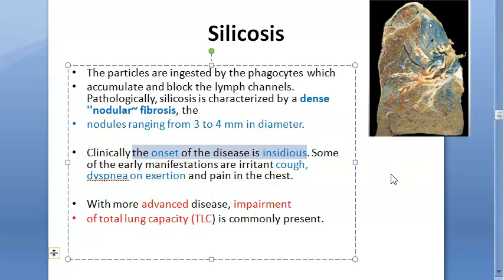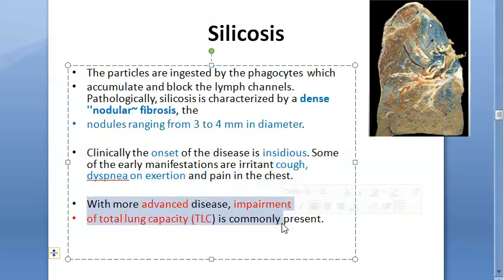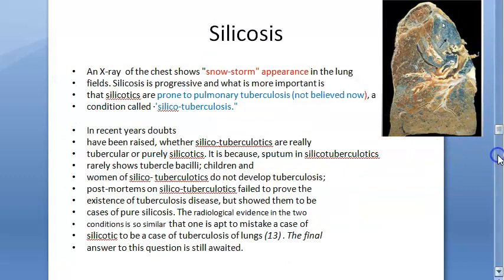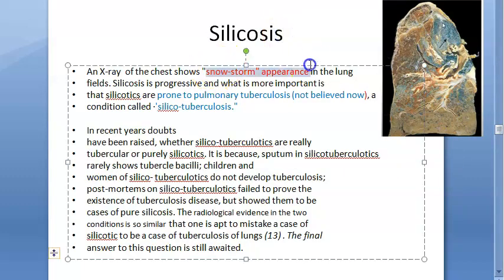The onset is insidious. Initially, the person will have irritant cough, dyspnea on exertion, and chest pain. In advanced cases, there will be impairment of total lung capacity.